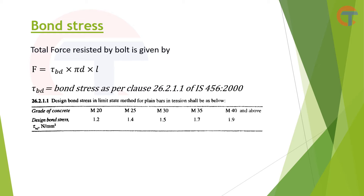These values are for the limit state, meaning the forces obtained by putting these values must be divided by a factor of safety to get the working force. Also, these values are for smooth bolts — the table is titled 'design bond stress in limit state method for plain bars.' If the bolts are threaded, we can increase these values by 60%. Everything will be clear in the later part of this video when we do a small numerical example.